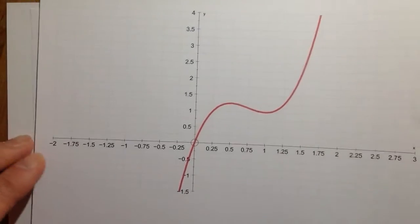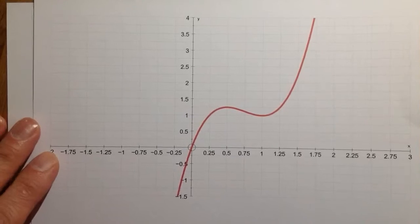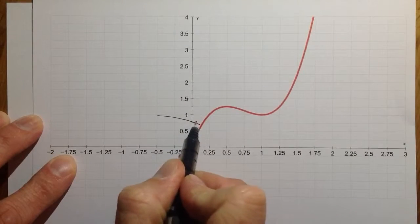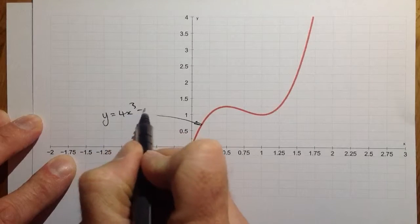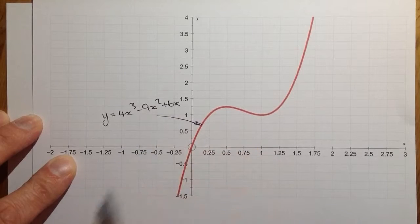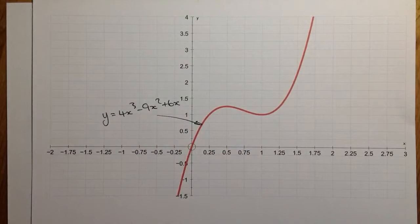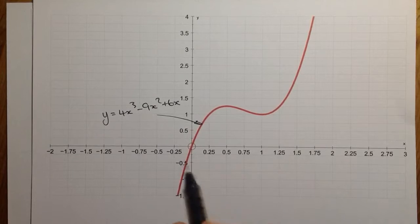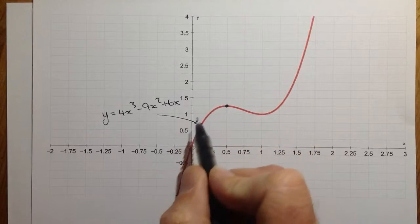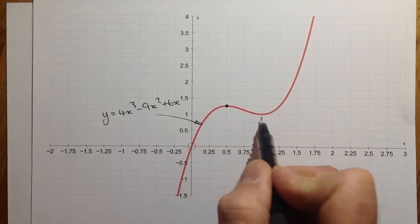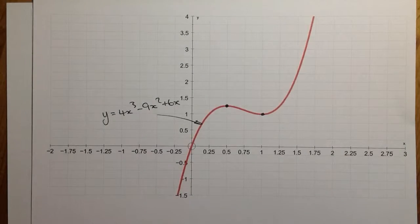Before we start into that question, what I'd like to do is show you really what the question's asking us to do. What I have here is a drawing, or a graph, of the curve y = 4x³ - 9x² + 6x. And what we have to do is find the stationary values — the turning points, or the points of inflection on the curve. I can see that there's a turning point right here, and I can also see that there's a turning point here. So there are two points that I'm interested in in this question.